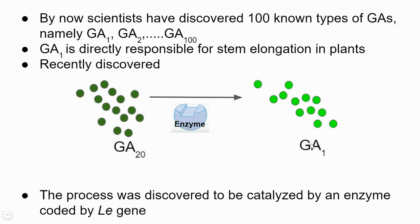To summarize: gibberellins elongate plant stems. Before gibberellins start doing their function, they get converted from GA20 to GA1, and this reaction is catalyzed by an enzyme coded by the LE gene (capital LE).